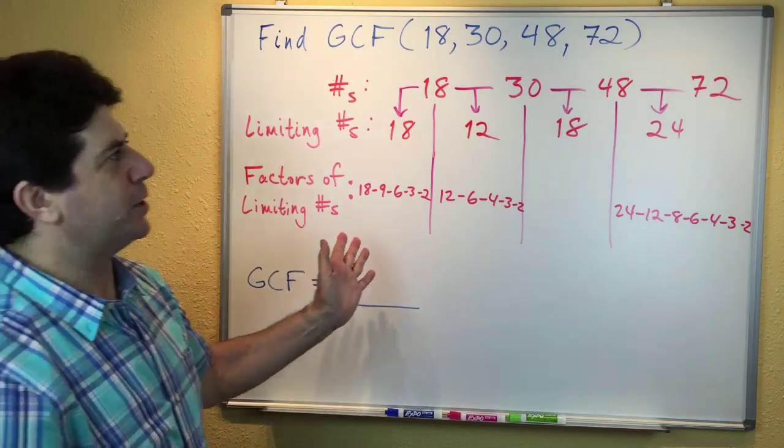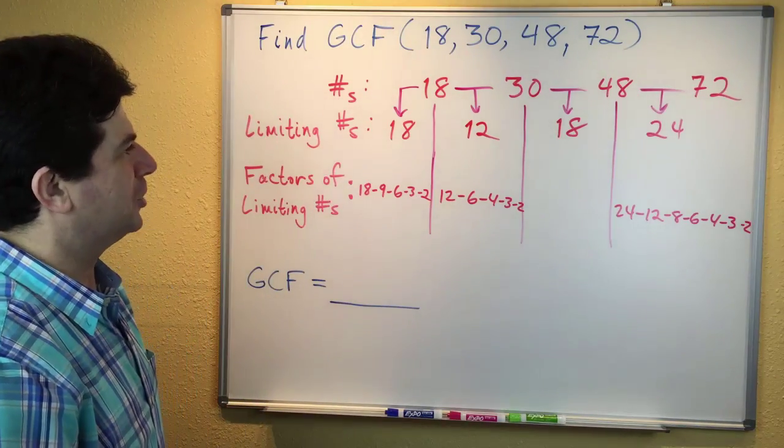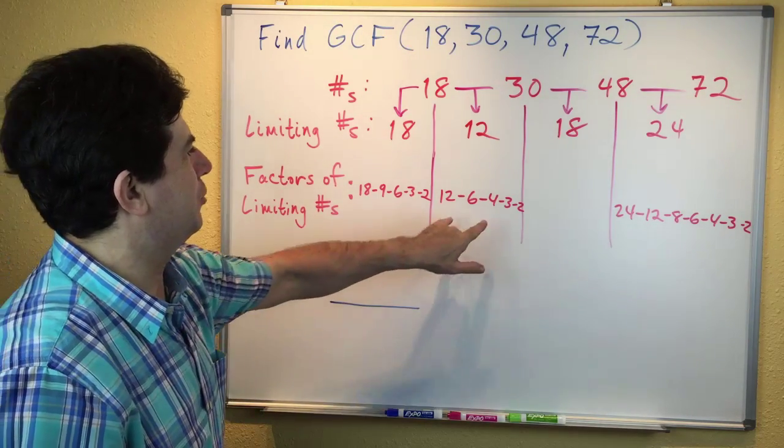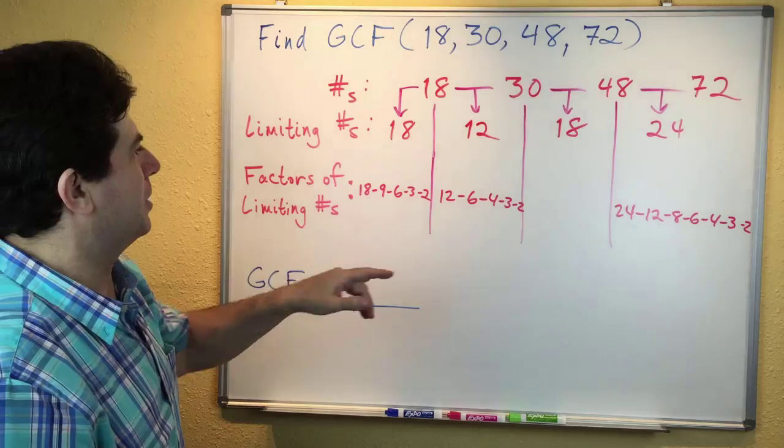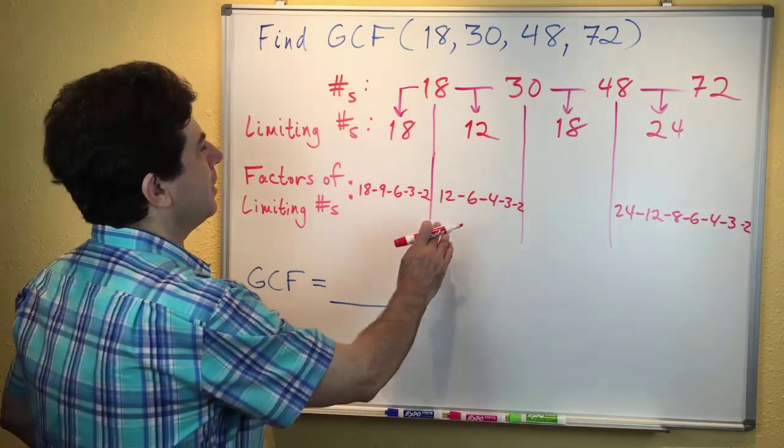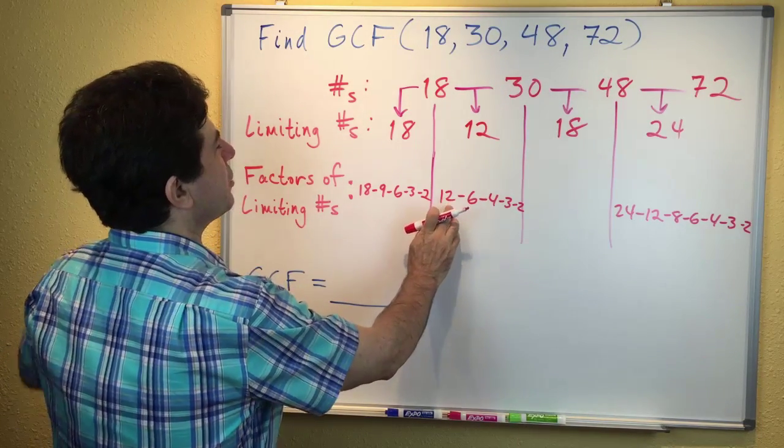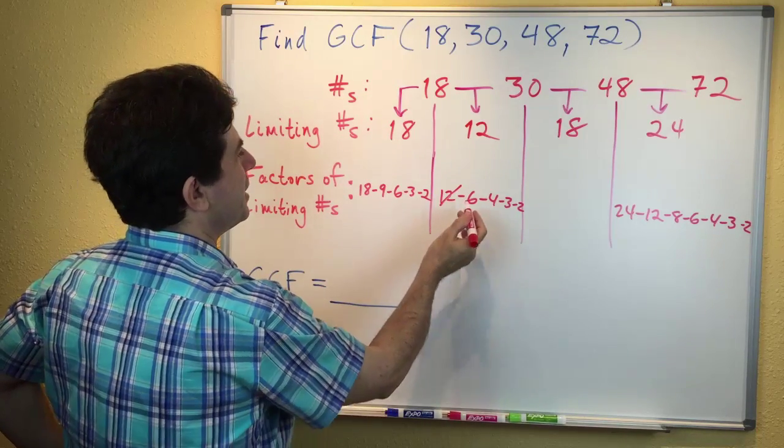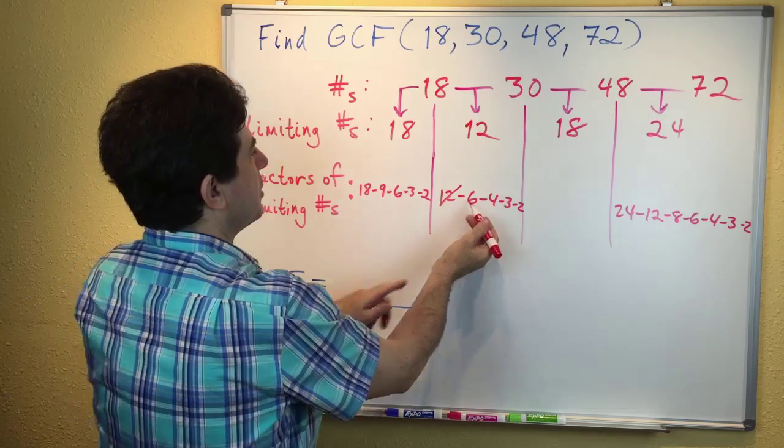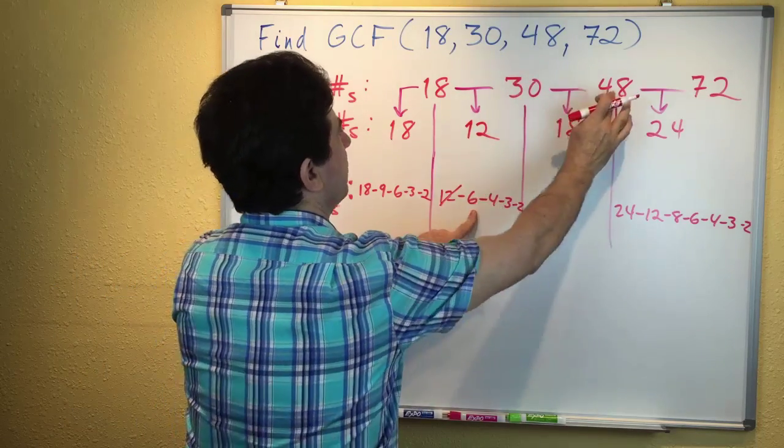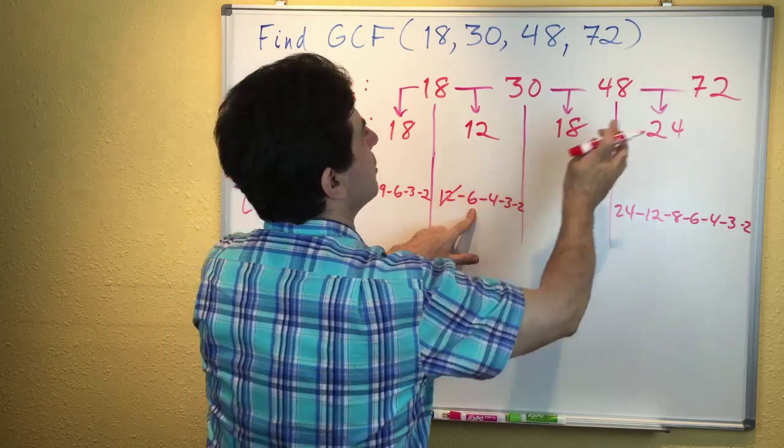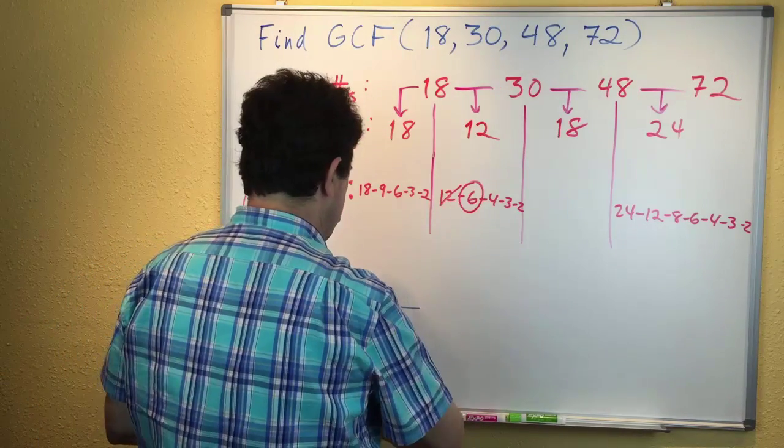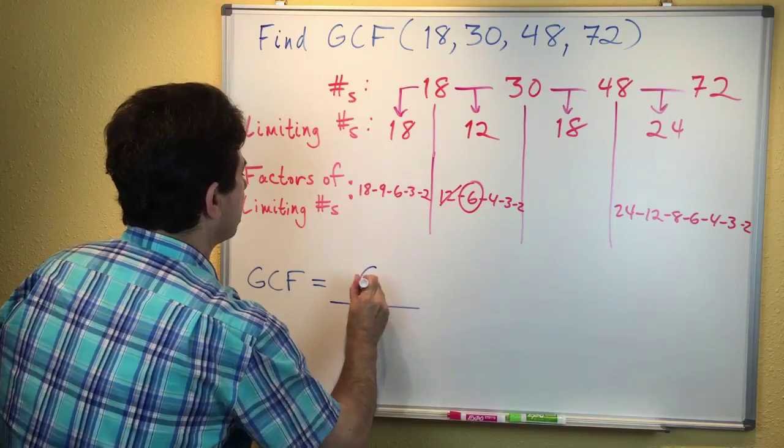It doesn't matter which column we start with. Just for fun this time, let's start with the factors of 12 because that's one of the smaller ones. Does 12 go into 18? No. Forget about 12. Does 6 go into 18? Yes. Does 6 go into 30? Yes. Does 6 go into 48? Yes. Does 6 go into 72? Yes. 6 goes into every number. 6 is the GCF. We're done.